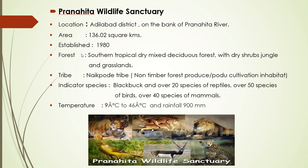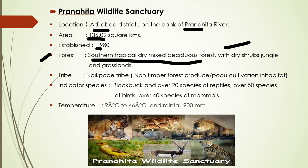The next is Pranahitha Wildlife Sanctuary, located in Adilabad district on the banks of the Pranahitha River. Its area is 136.02 square kilometers and it was established in 1980. The forest type is Southern Tropical Dry Mixed Deciduous Forest with dry scrubs, tangles, and highlands. A direct exam question: which tribe can be found here? The answer is the Naikpode tribe. Indicator species include blackbuck, along with 20 species of reptiles, over 50 species of birds, and 40 species of mammals.